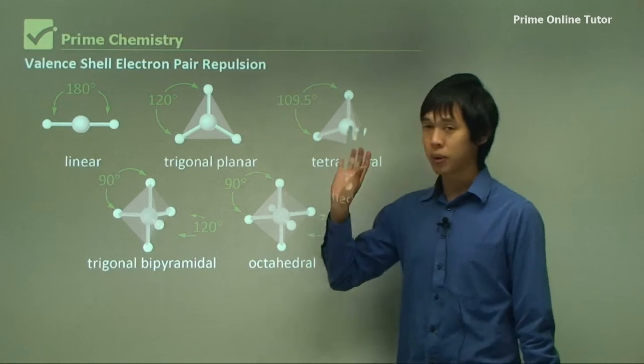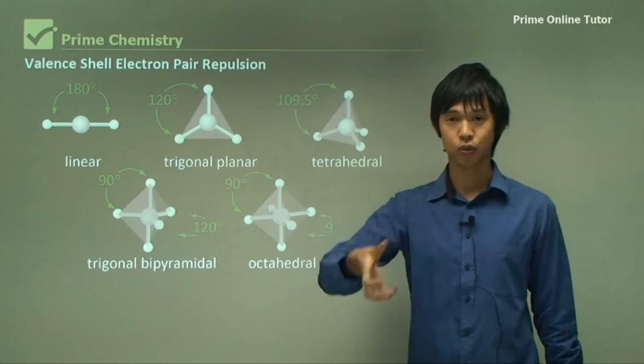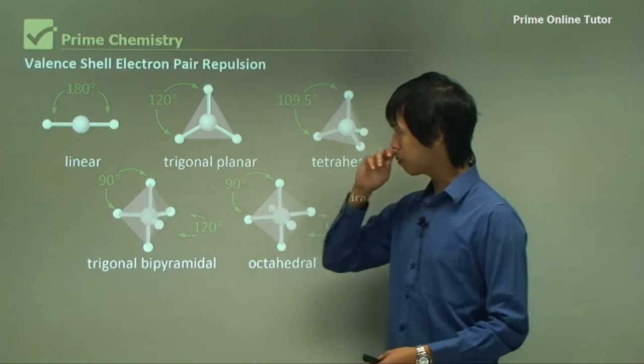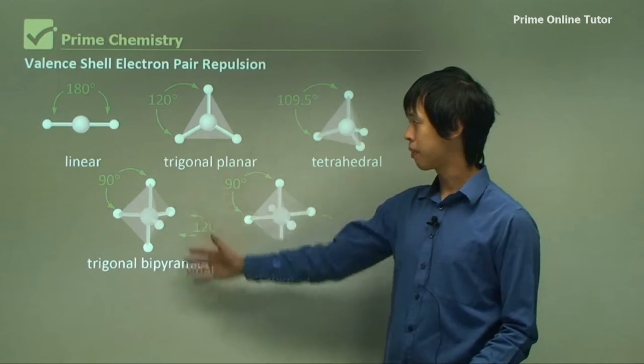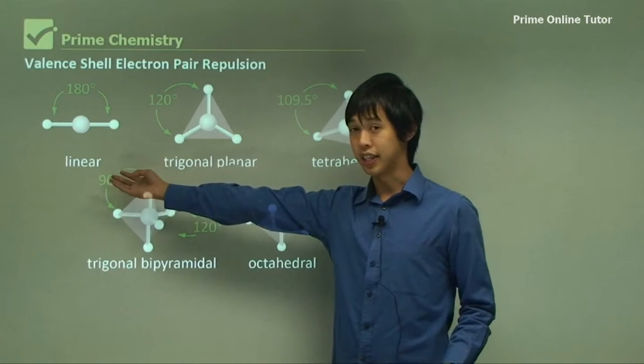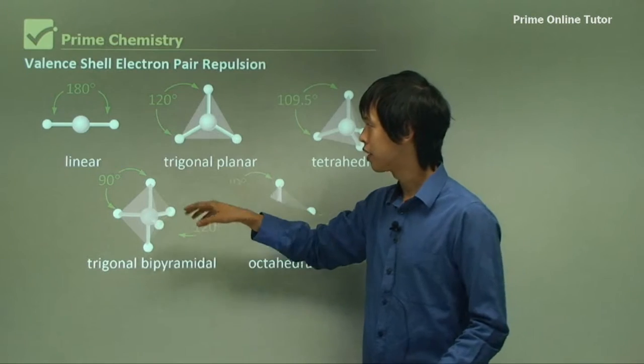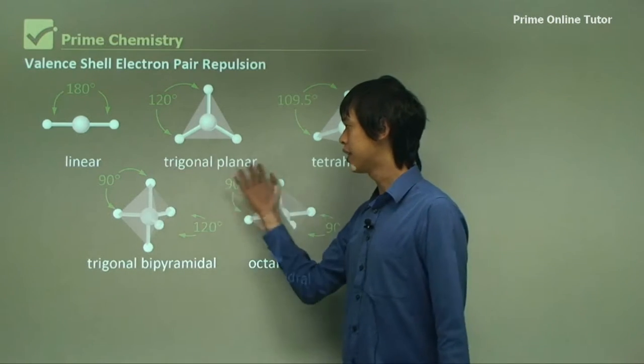The whole point of this is we can use this theory to predict what shapes the molecules will form, depending on what chemicals are inside them. So there are some typical shapes that we can see from this diagram. For instance, there's the linear shape, so where all the components are lined up one after the other. That's something like carbon dioxide. This trigonal planar is you can see in things like ammonia.